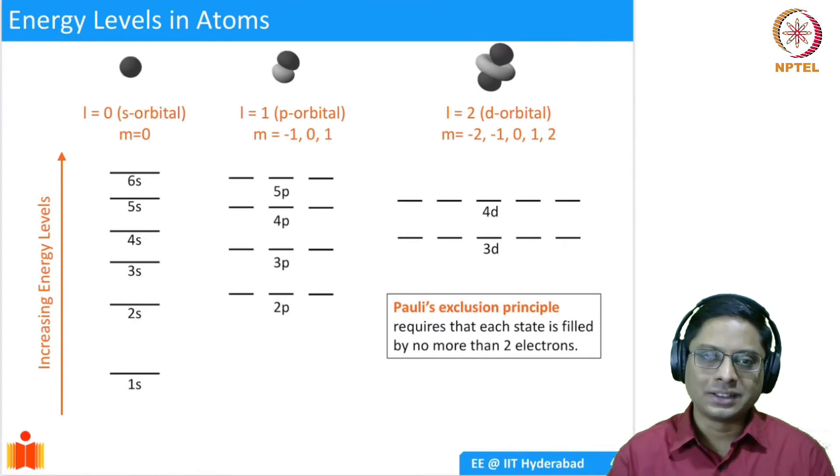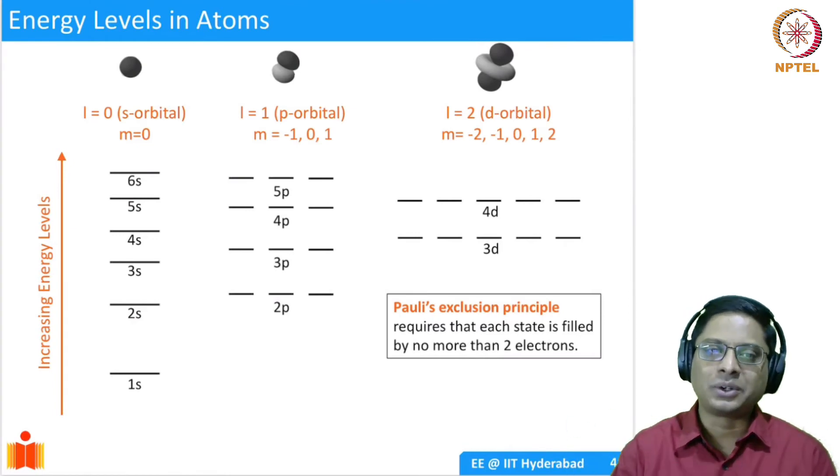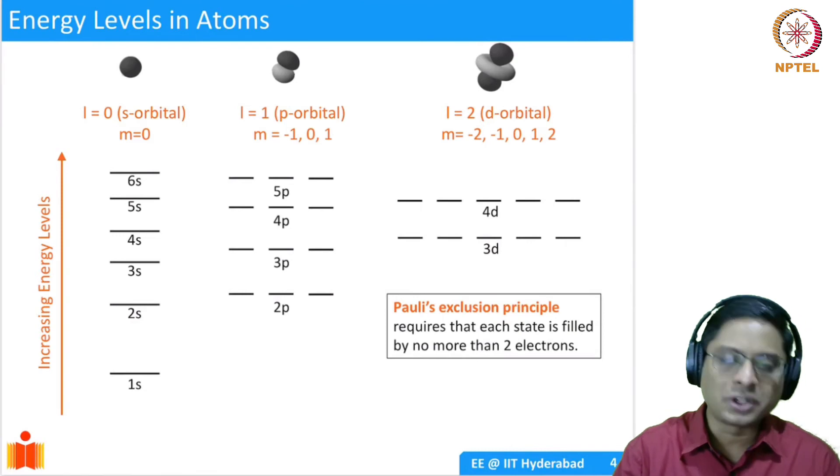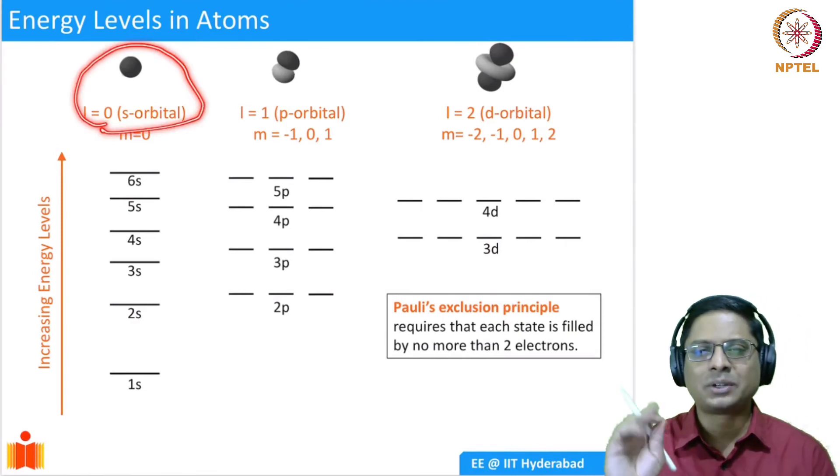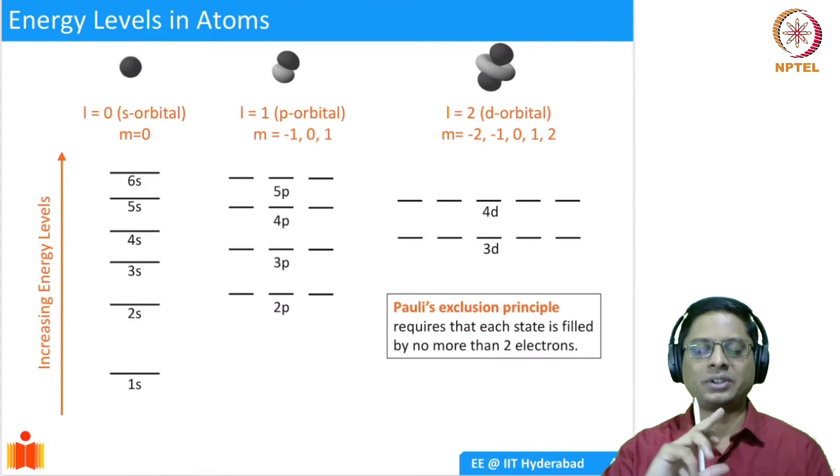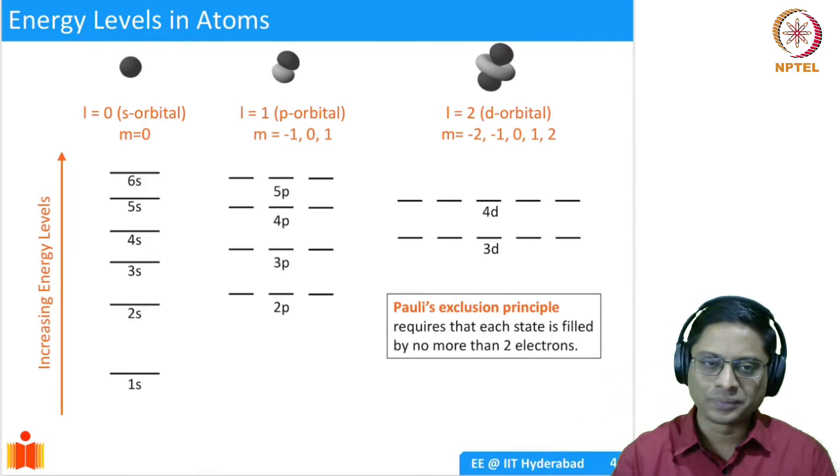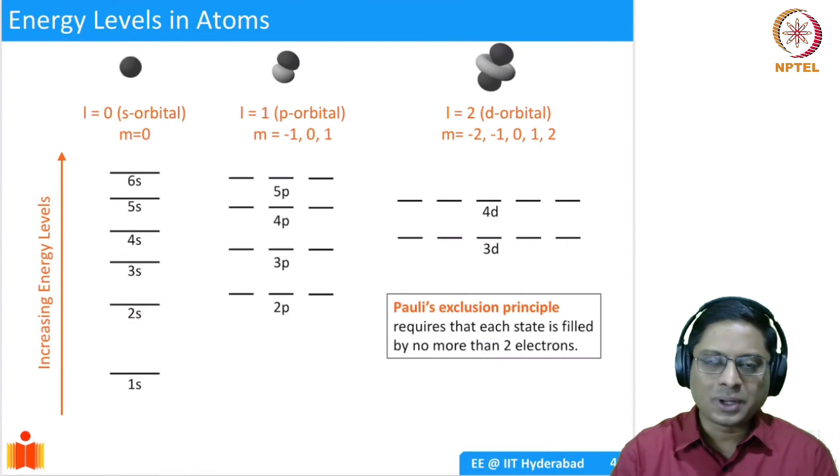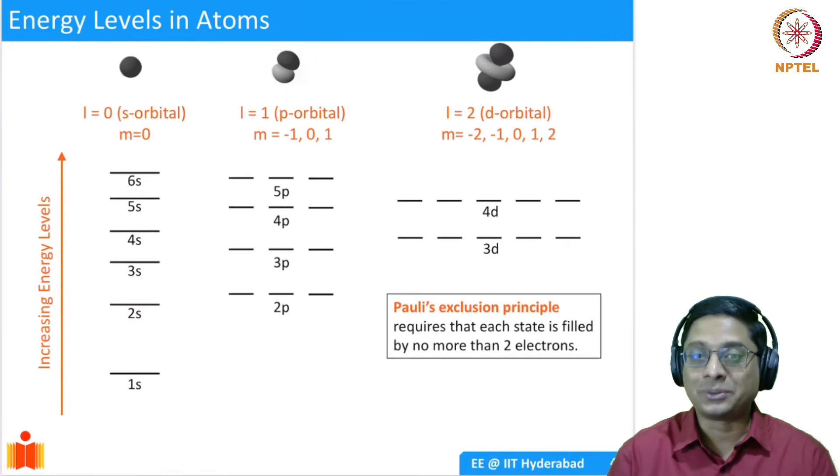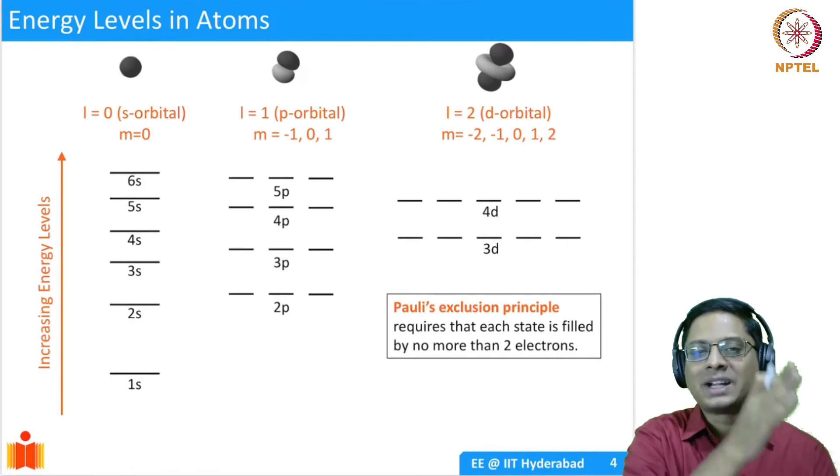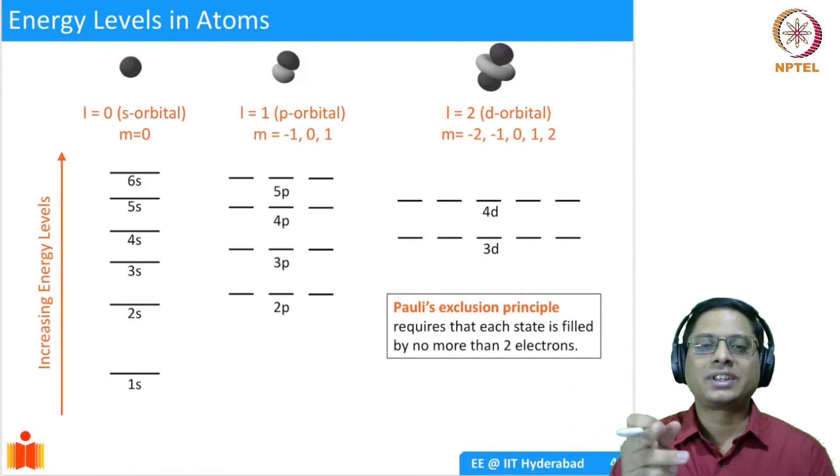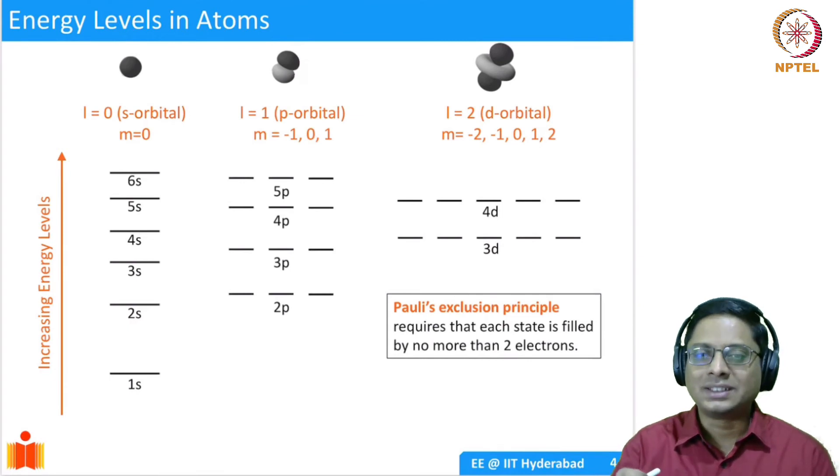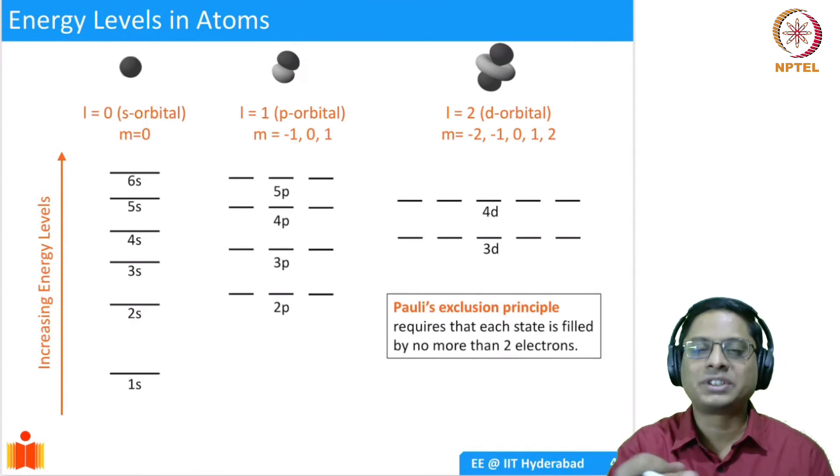We have this quantum number N capturing the confinement in the radial direction, because of which you have 1, 2, 3, and so on states. The quantum number L can have 0, 1, 2, and so on. When L equals 0, you would have understood this as s orbital, which means your probability is uniform in all directions, the probability of finding a particle is uniform. Whereas if you put L equal to 1 and solve that, you will see that the probability has this dumbbell shape, which you would have studied as p orbital.